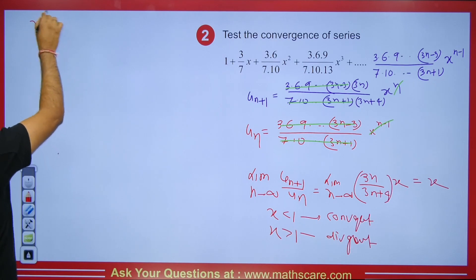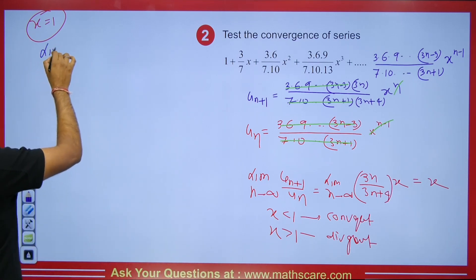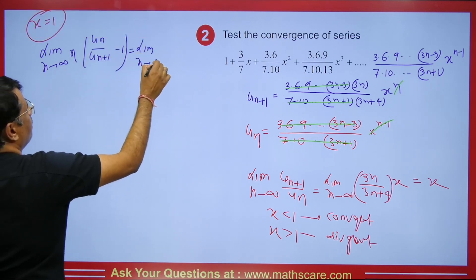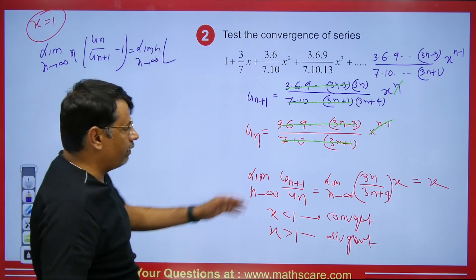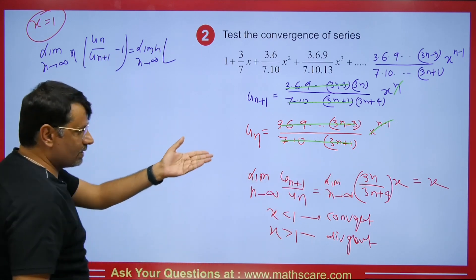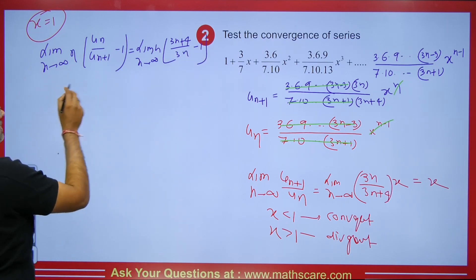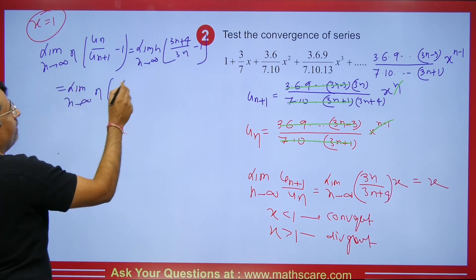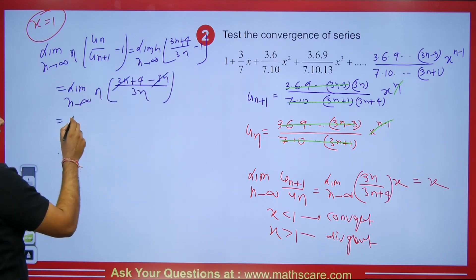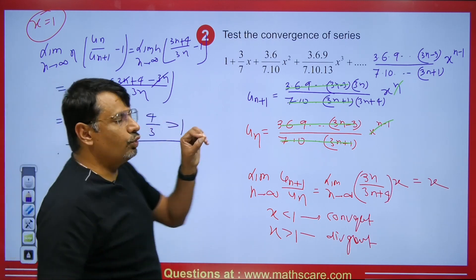When x = 1, the D'Alembert Ratio Test fails, so we apply Raabe's Test. The limit is n(u_n/u_{n+1} − 1) = n[(3n+4)/(3n) − 1]. Taking LCM: (3n + 4 − 3n)/3n = 4/3n. Multiplying by n gives 4n/(3n), and as n → ∞ this simplifies to 4/3, which is greater than 1.